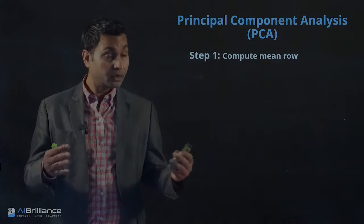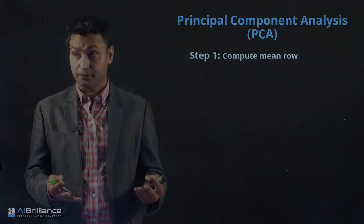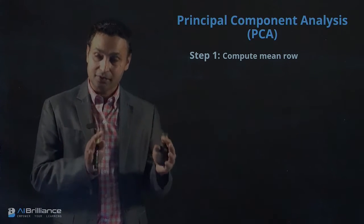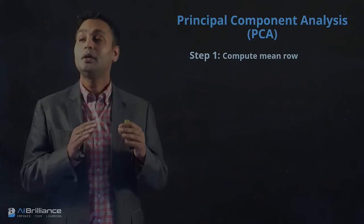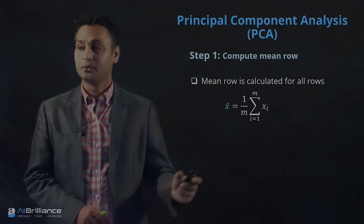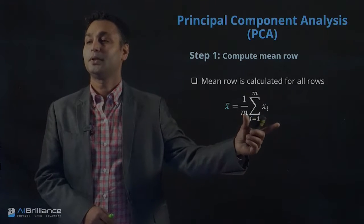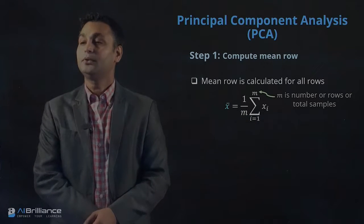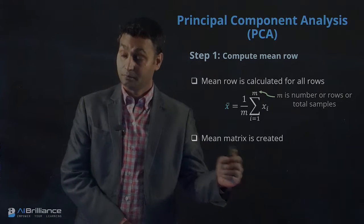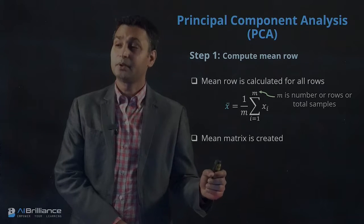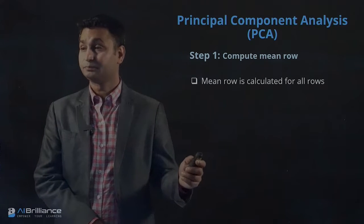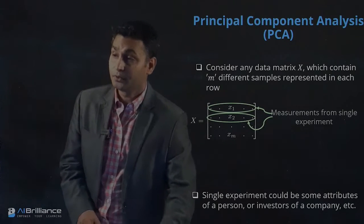In PCA we have four main steps. The first step is computing the mean row. Given X, you compute the mean row — x_mean — which is computed across all the rows using the mean equation. You then use this information to create a mean matrix. Let me quickly show how x_mean could be computed given an X matrix.